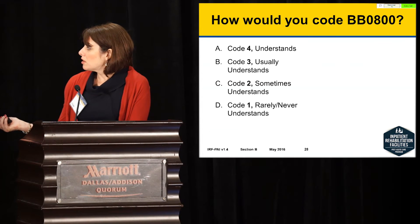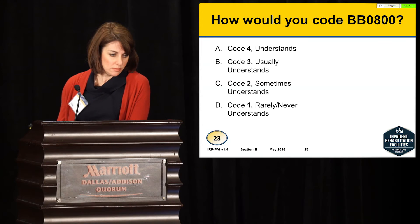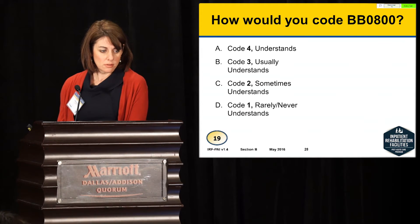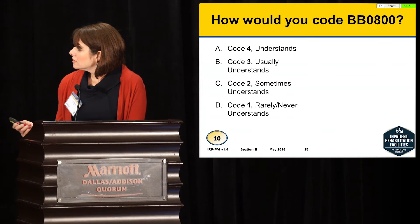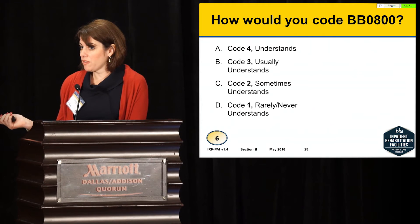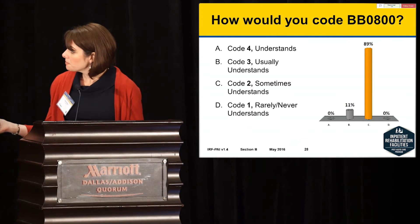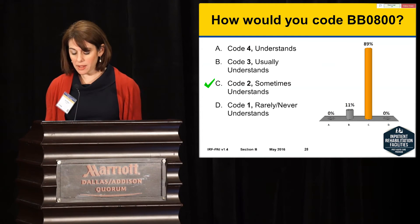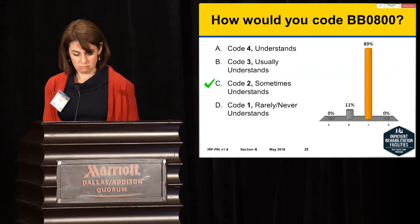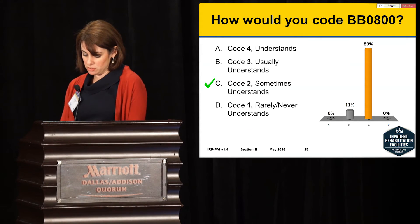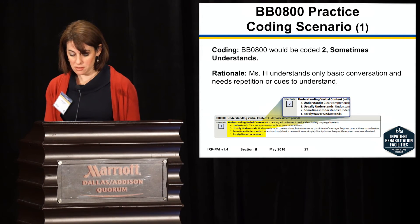89% correctly coded this a C — sometimes understands — and the correct answer is C, code 2. Ms. H requires repetitions or cues to understand and only comprehends basic conversations. That's why we're coding Ms. H a 2.